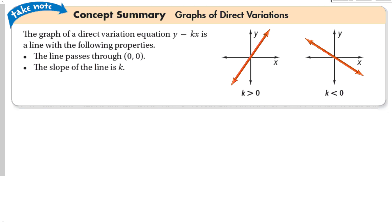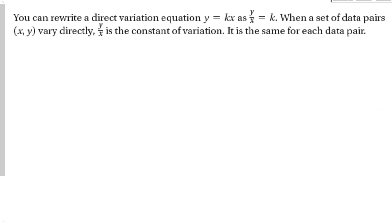To recap: the graph of a direct variation is a line with the following properties. It always passes through the origin (0, 0), no matter which equation we're looking at. The slope of the line is k. If k is positive, the line goes up — as x goes up, y goes up. If k is negative, the line goes down. We can also rewrite y equals kx as y over x equals k, meaning every ratio y/x is always the same constant for any two points.